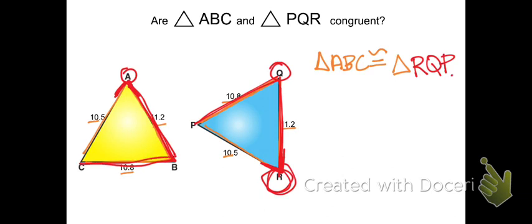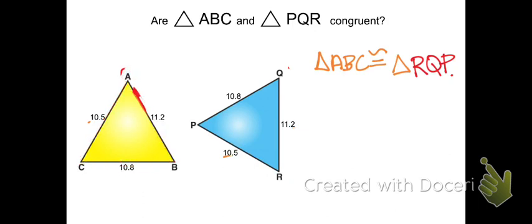And then PR is 10.5 and AC is also 10.5. So we can write a congruent statement for these two triangles, but we just have to rearrange the letters so that the corresponding sides are congruent. Because if you have three sets of corresponding sides that are congruent, you can conclude that those two triangles are congruent.